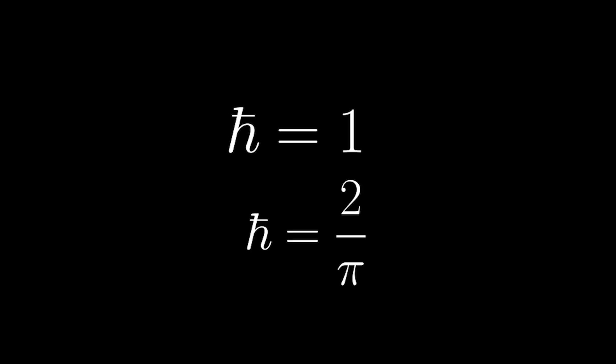Also recall from physics that we can choose to work in natural units, meaning h bar equals the speed of light, which equals 1. This means that h bar equals 1, and we can plug in 2 over pi for h bar to obtain that 2 over pi equals 1.